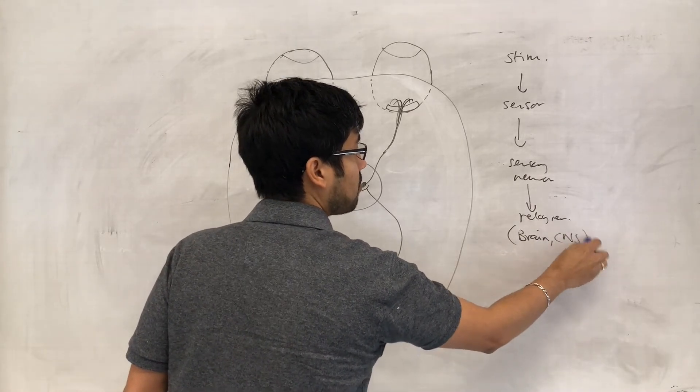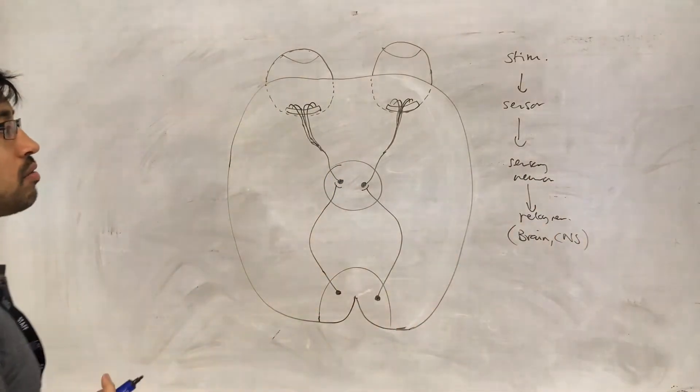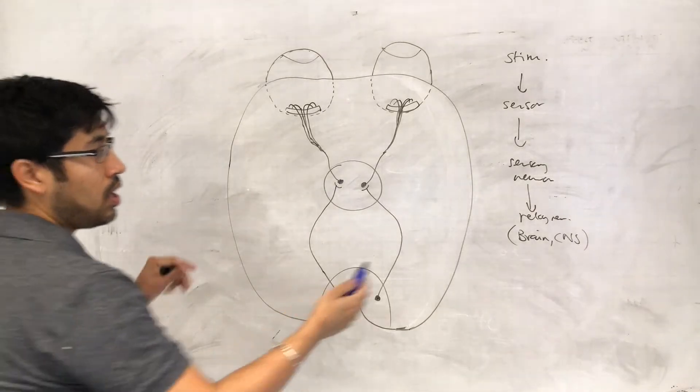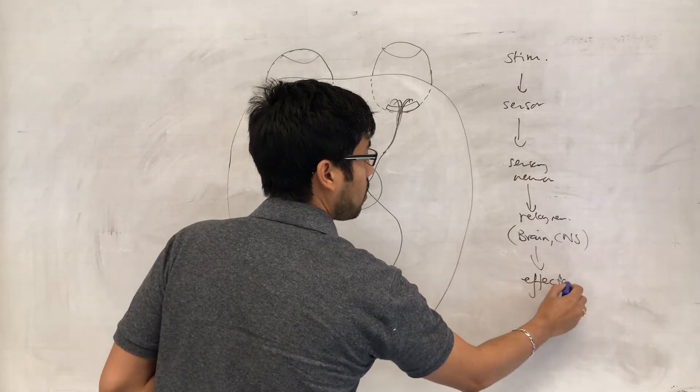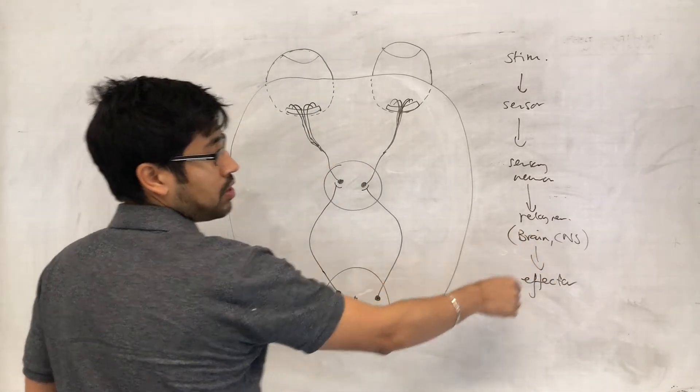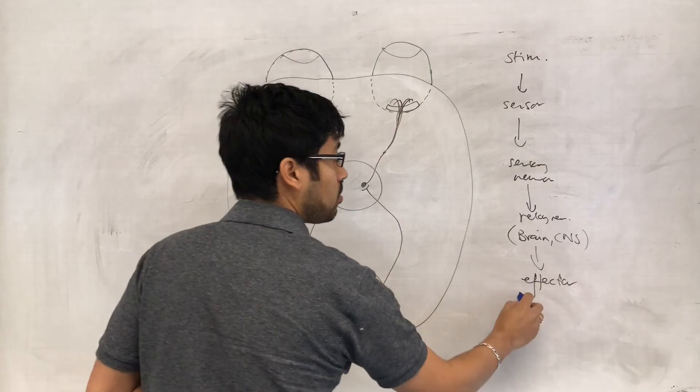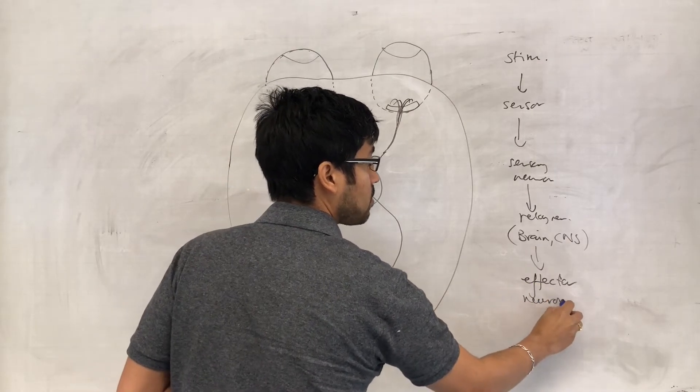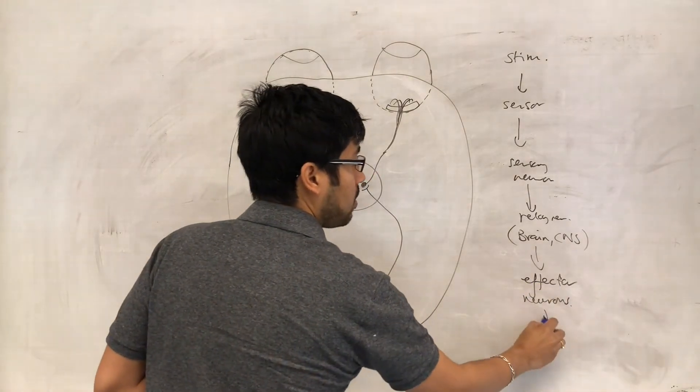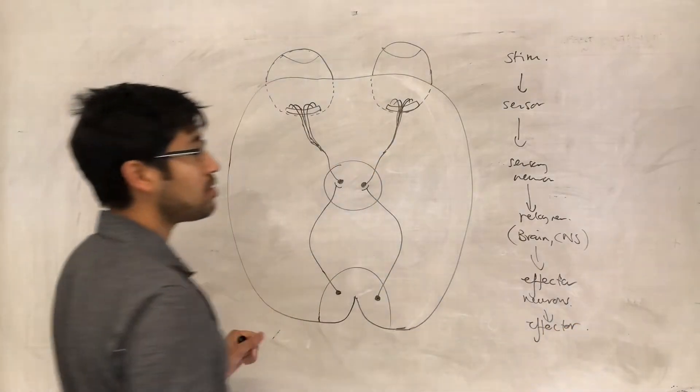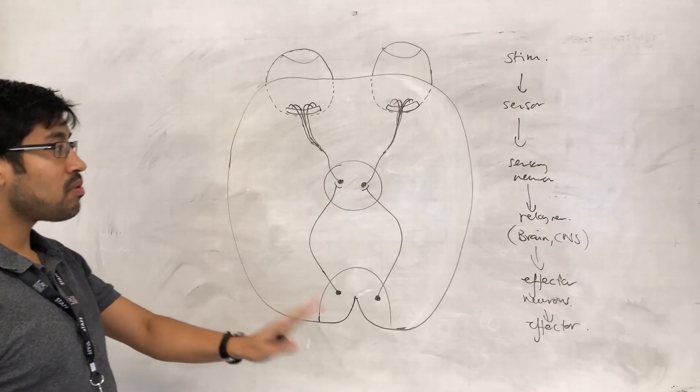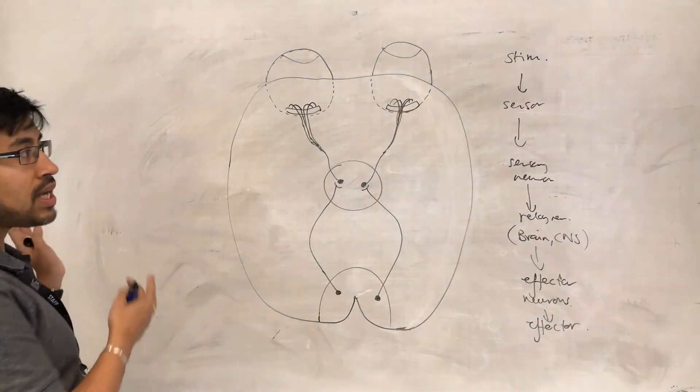Or just the central nervous system relay neuron for a reflex response. And then as a result of that, there's going to be stimulation of effector neurons, which will eventually stimulate an effector to make a response.